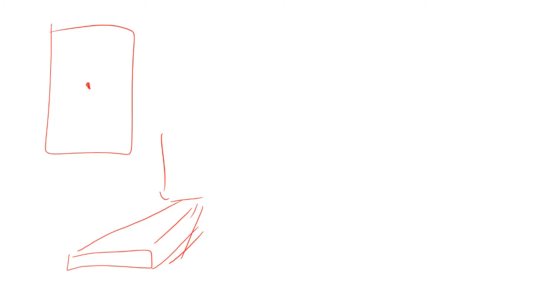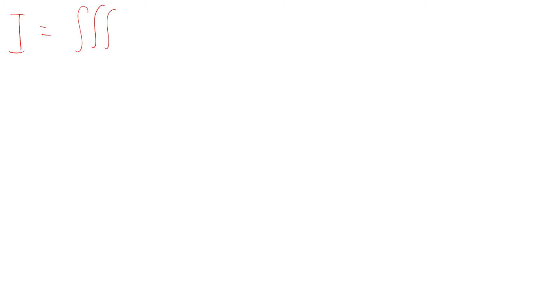If you look down on this thing — instead of looking at it obliquely, if you look down on the top of it — then the axis of rotation is right there in the middle, and if we got some little dm over here, that's R. Notice if this is x and y, R squared equals x squared plus y squared. So i is going to be this integral of rho times x squared plus y squared dx dy dz.